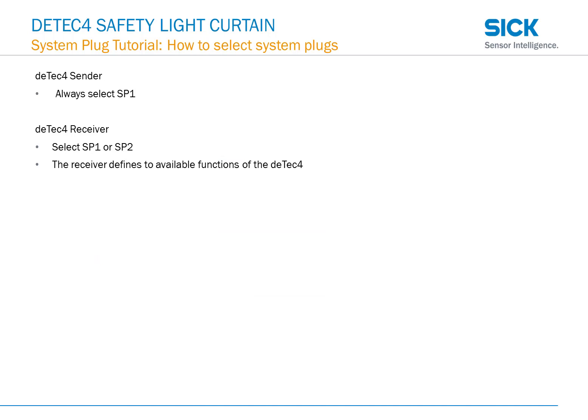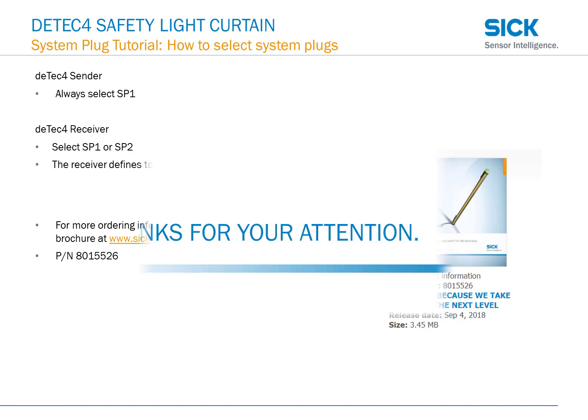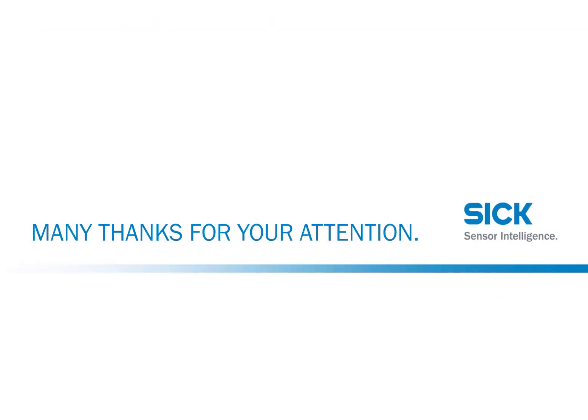So how do we select the system plugs? The DTEK4 sender always uses an SP1, while the DTEK4 receiver can use either SP1 or SP2. This is because the receiver defines the available functions of the DTEK4. For more ordering information, you can refer to the DTEK product information brochure at www.sic.com. Thanks for watching.